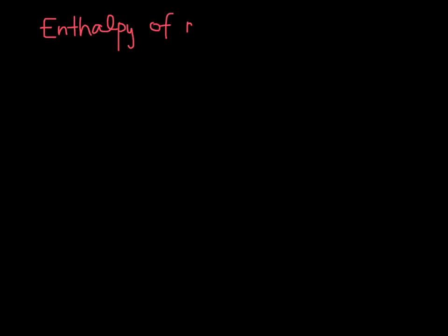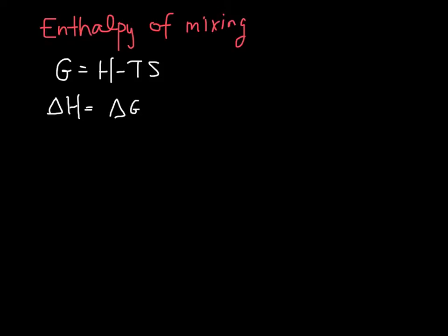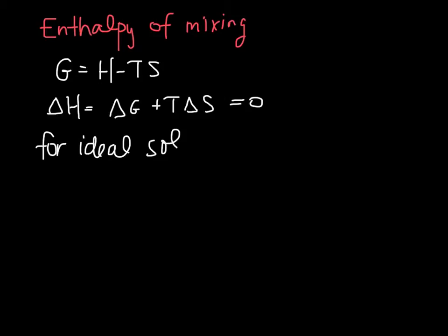For ideal solutions, looking at the enthalpy of mixing: we recall that G is defined as H minus TS, so delta H equals delta G plus T times delta S. Plugging in what we found for delta G mixing and delta S mixing, we find this is equal to zero. So for an ideal solution, delta H mix equals zero, always.